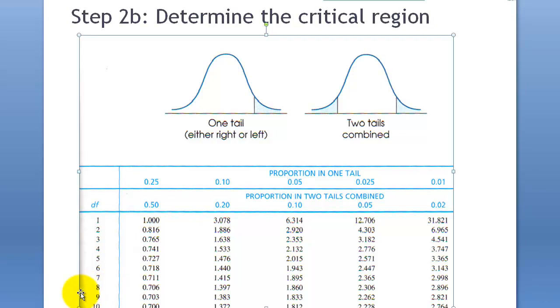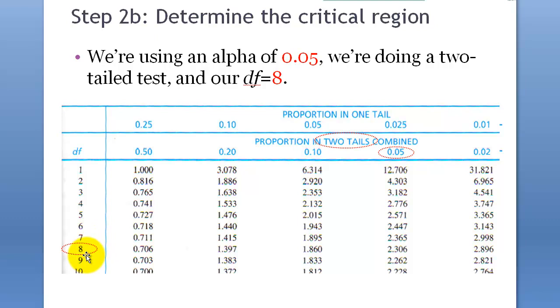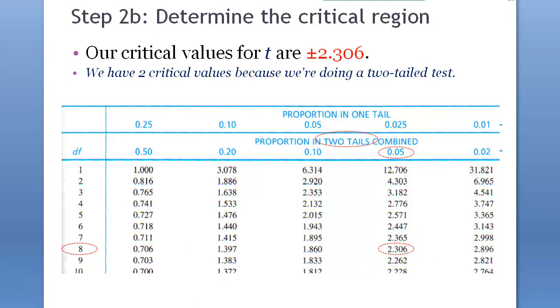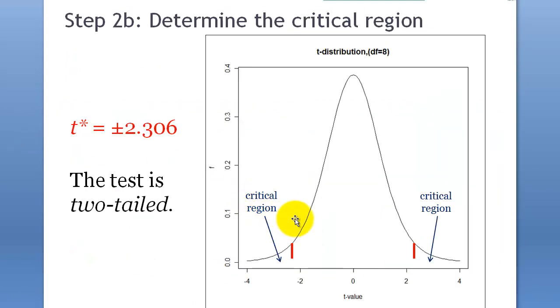Okay, so, degree of freedom is 8, and we want to set the alpha level at 0.05 with the two tails combined. So, we look at this, and look at that, and the cross section of these two would be this, 2.306. And this is how we set the critical regions.